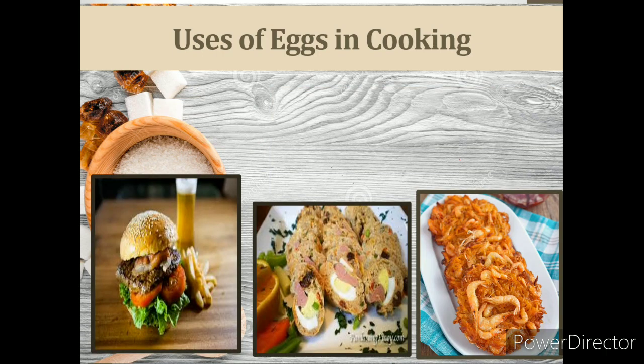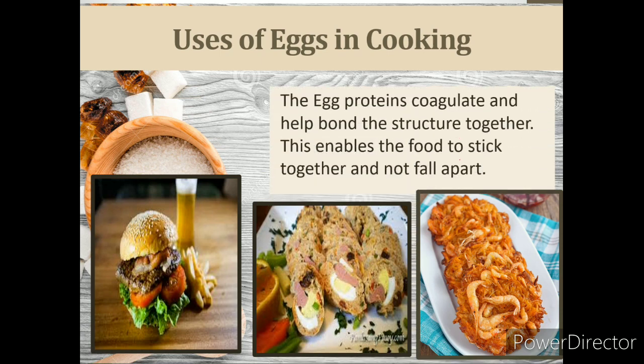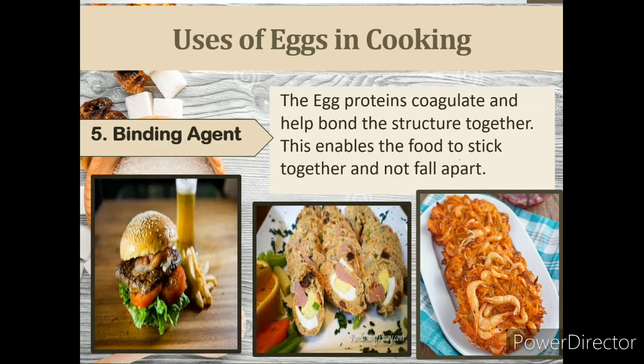The fifth use of eggs in cooking is as a binding agent. The egg proteins coagulate — coagulation is the changing of a liquid or fluid to a solid or semi-solid state. With the addition of eggs to minced meat and mashed vegetables, egg helps to bind the mixture. As heat causes coagulation, the proteins are bound into a cohesive mass. This enables the food to stick together and not fall apart. Examples are meatloaf, okoy, and hamburger patties.